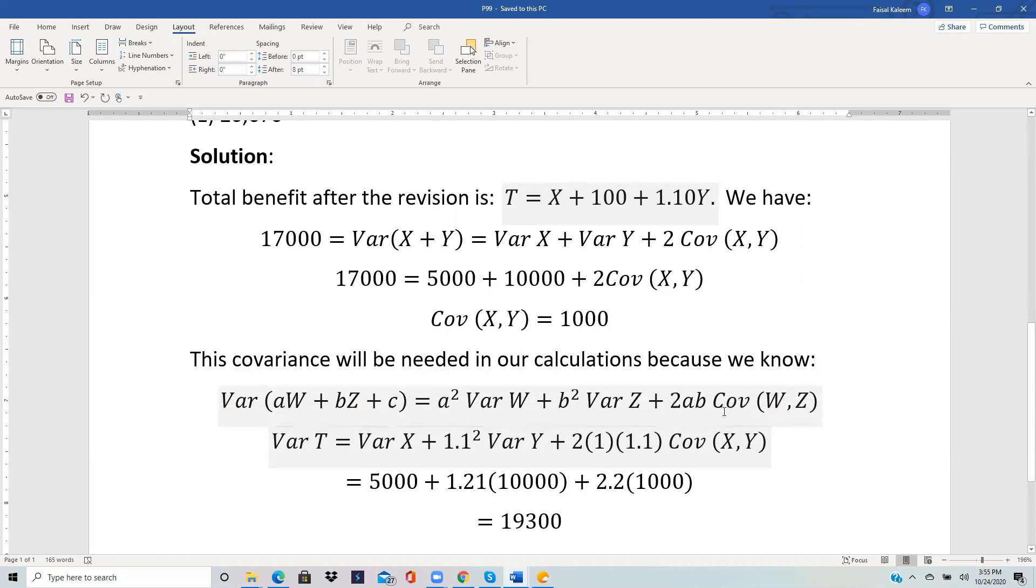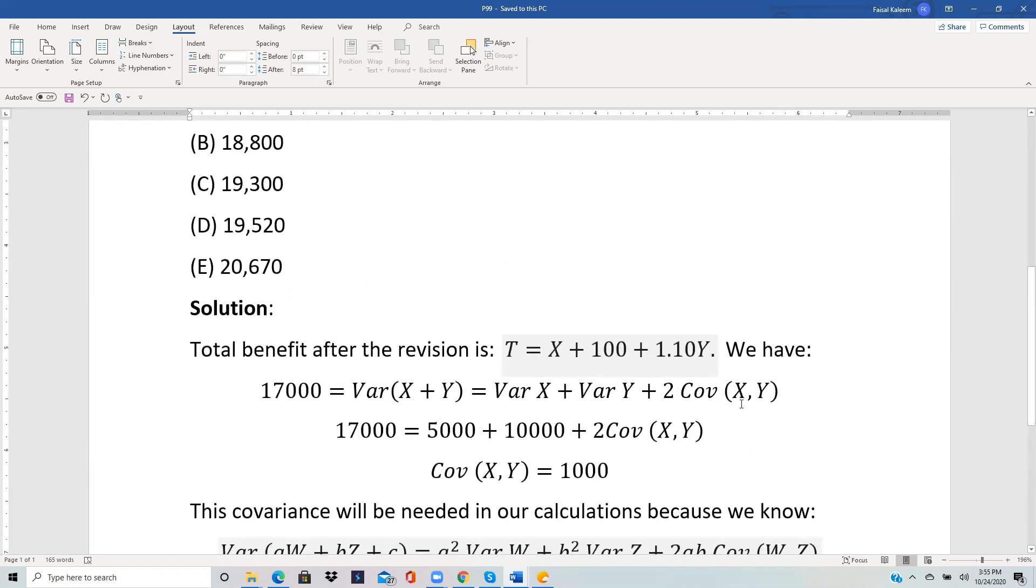And now because of this, we will need the covariance. So therefore, we start by calculating—in this case, the main variables are X and Y. So we know that when we are doing the variance of T, we will need the covariance of X and Y.